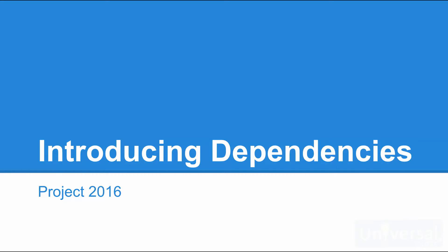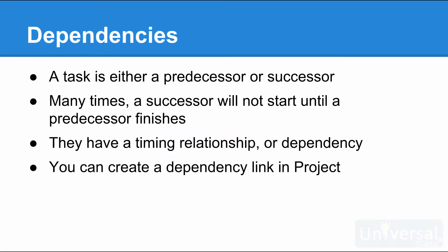Introducing dependencies. A task is either a predecessor or a successor, meaning it comes before or after another task. Many times, a successor task will not start until the predecessor task finishes — task B will not start until task A finishes. This means they have a timing relationship. When two tasks have a timing relationship, they are a predecessor-successor pair.